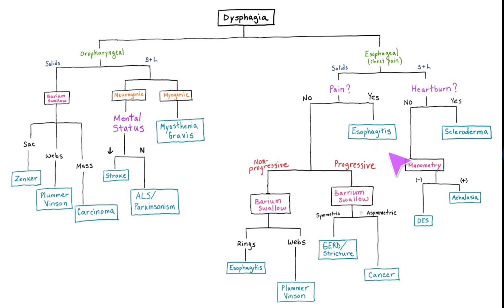If there are no symptoms of heartburn, perform a manometry or alternatively a barium swallow. If they are negative, this is possibly diffuse esophageal spasms, since they usually have normal findings between episodes. A good clue for this is a patient with recurrent symptoms of a myocardial infarction while not actually having it. Finally, a manometry that shows decreased or absent peristalsis indicates achalasia.